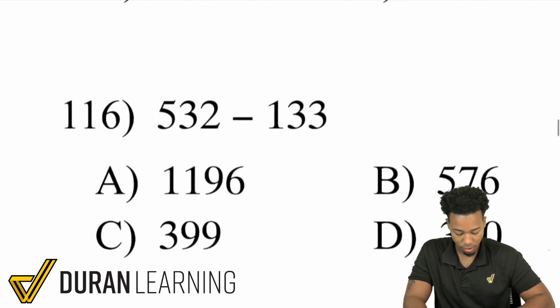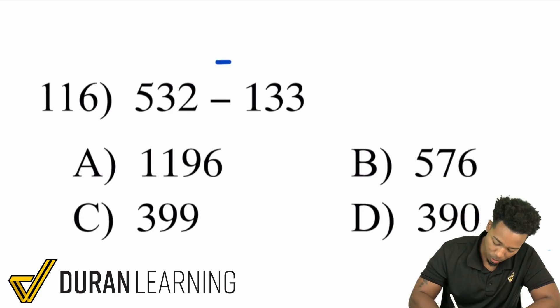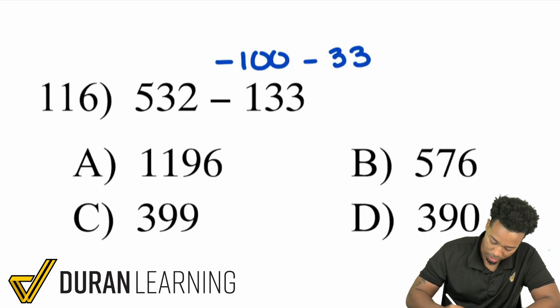Let's take a look at here's a good one. This is one where you don't have to think too hard about this one because I can start off by just taking away 100 then taking away the 33. So if I take a look here 532 minus 100